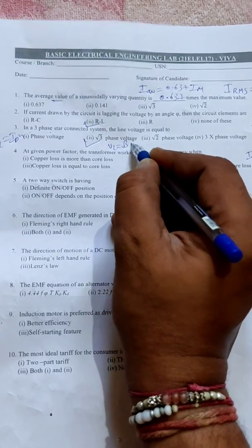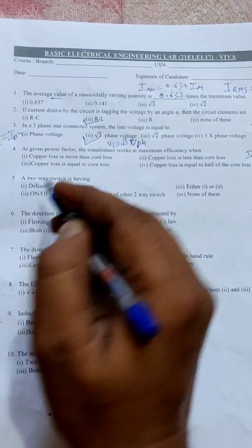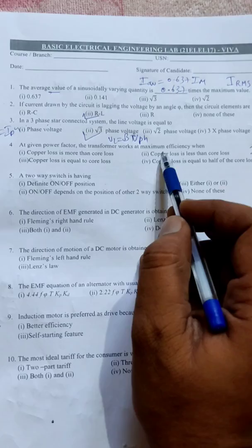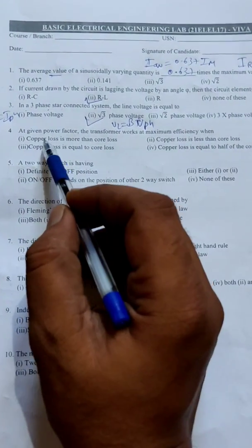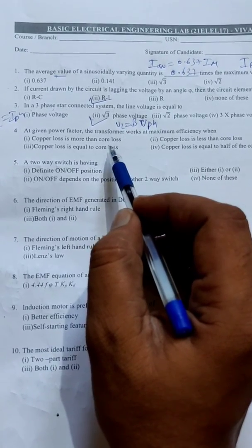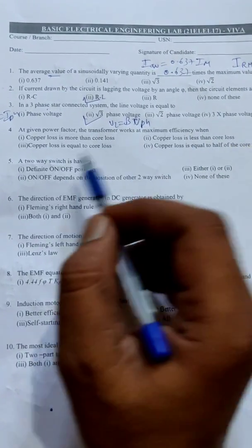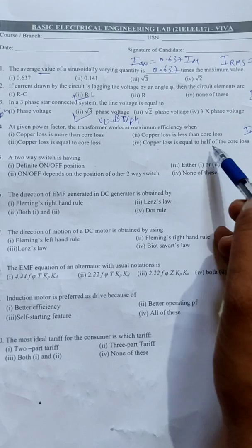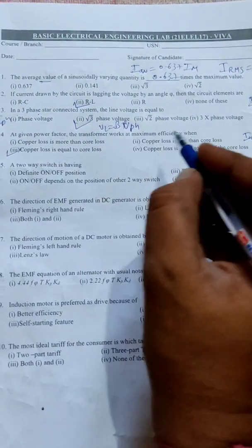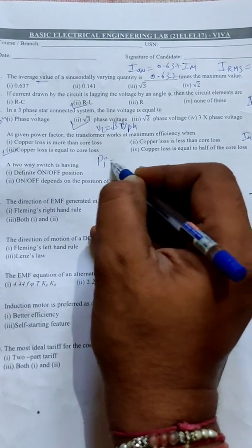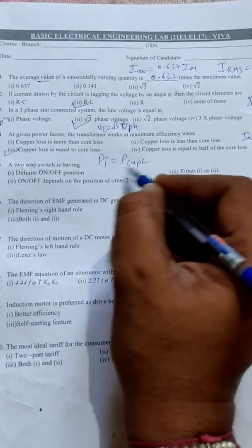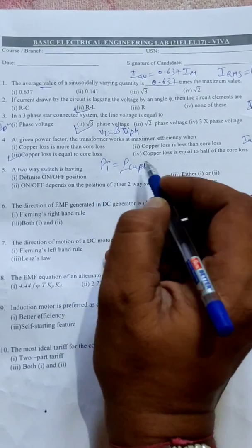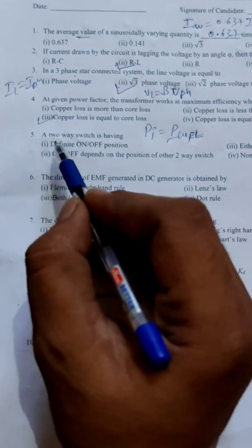Next question: At given power factor, transformer works at maximum efficiency when - option one, copper loss is more than core loss? No. Copper loss is less than core loss? No, not correct. Copper loss is equal to core loss? Third option is correct. We can attain maximum efficiency in transformer when iron loss is equal to copper loss, when iron loss is equal to full load copper loss. So option three is correct.